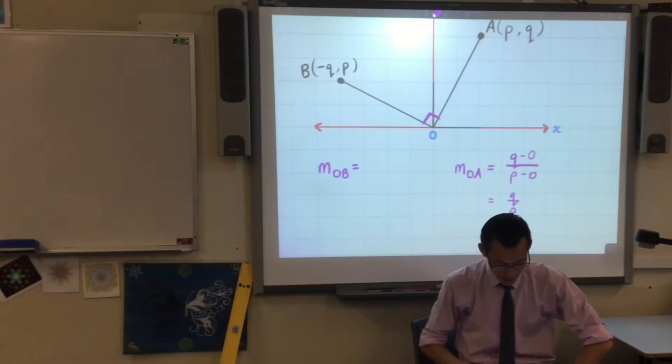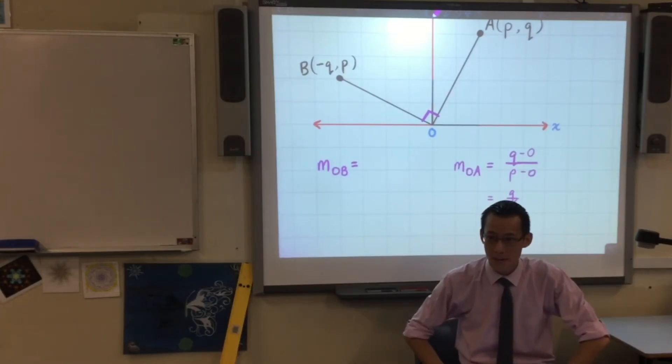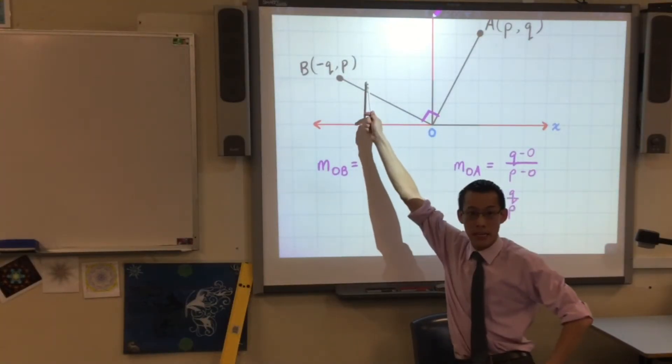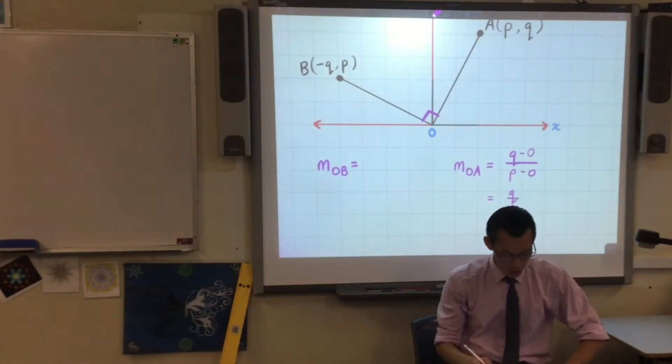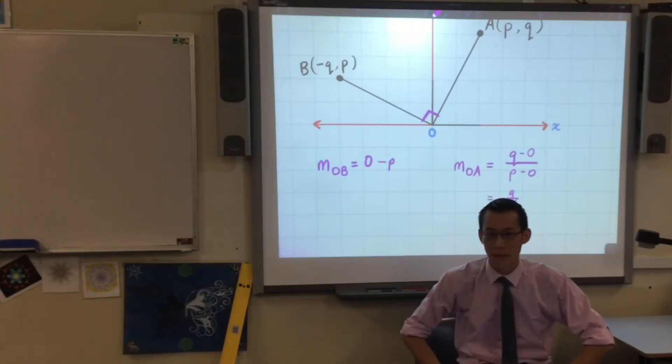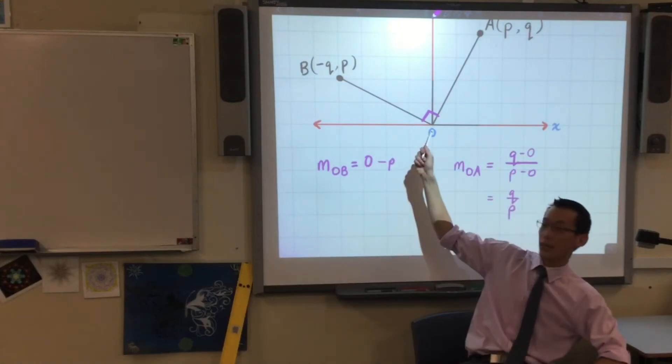Coming back to the left-hand side, for OB, what is the rise? Now, the rise has to do with the Y coordinate. So it has to be to do with this P here, right? But it's not going up, is it? It's going down, right? So you could either just say that's minus P, or where does that come from? It's actually zero minus P. Do you see why?